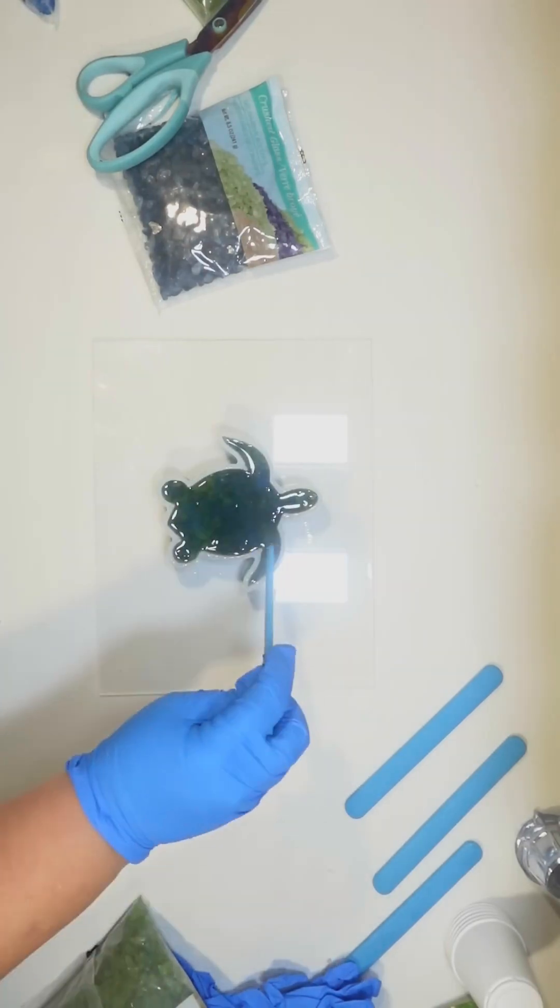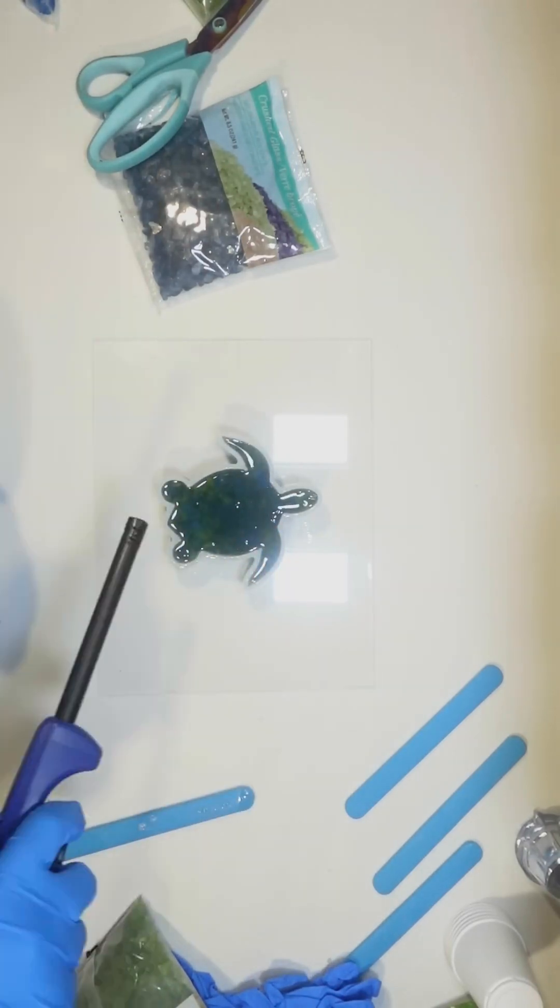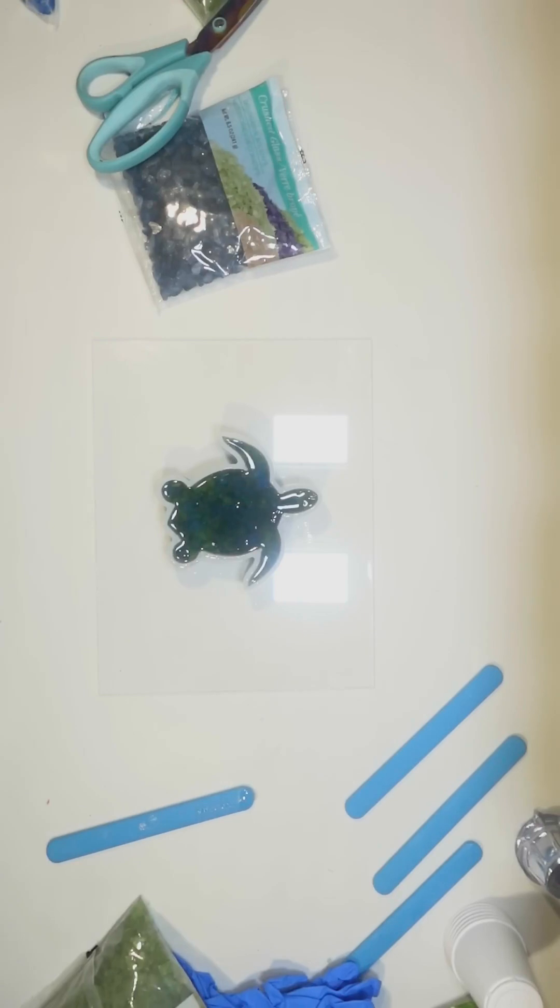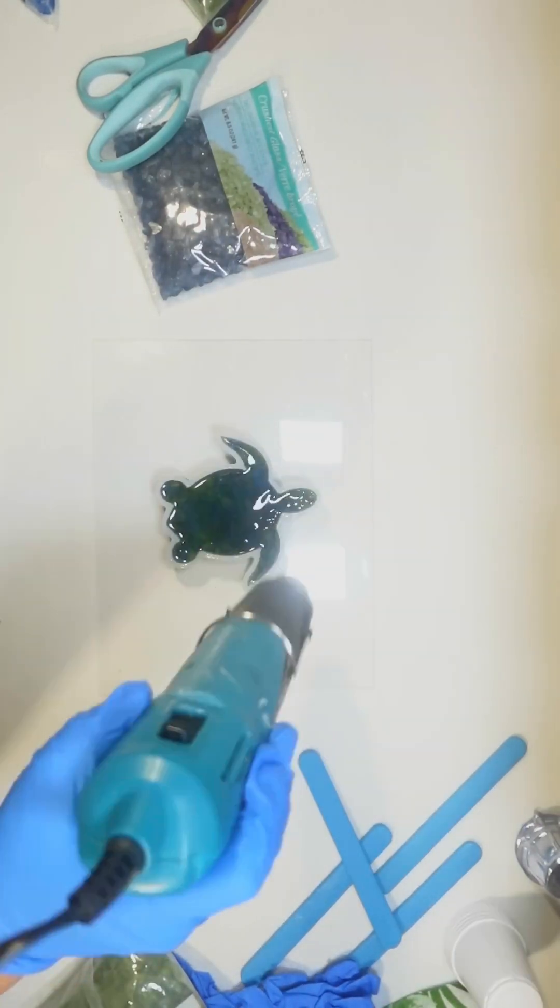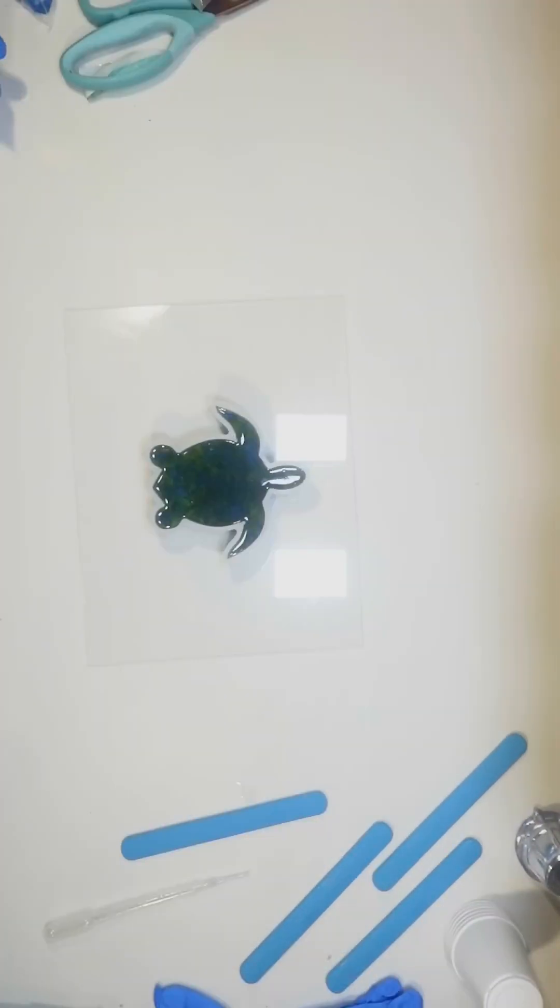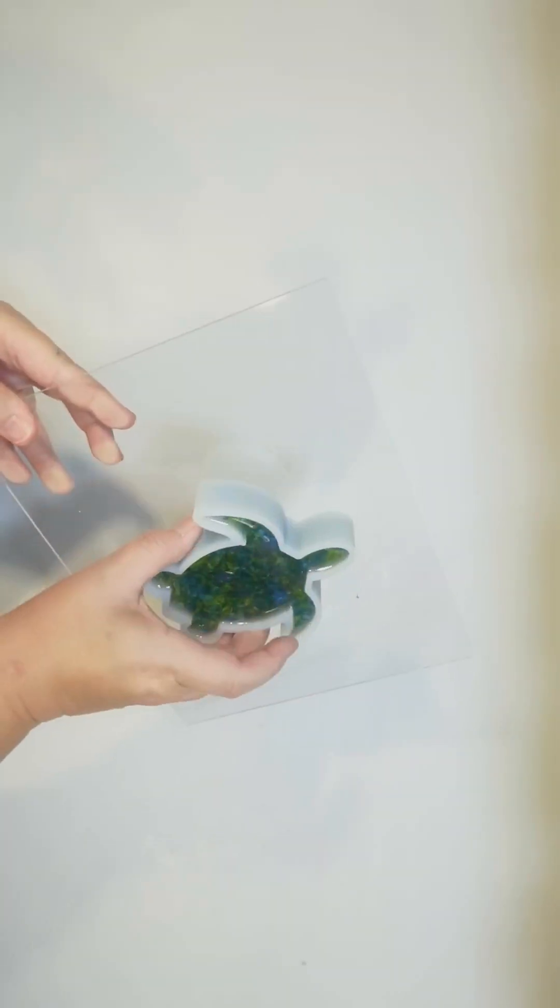I want to make this into a cute little sea turtle light using items from the Dollar Tree. So we've got the resin, and I'm going to use my heat gun to try to get rid of any bubbles. I have it on the acrylic board, so I set it aside overnight.